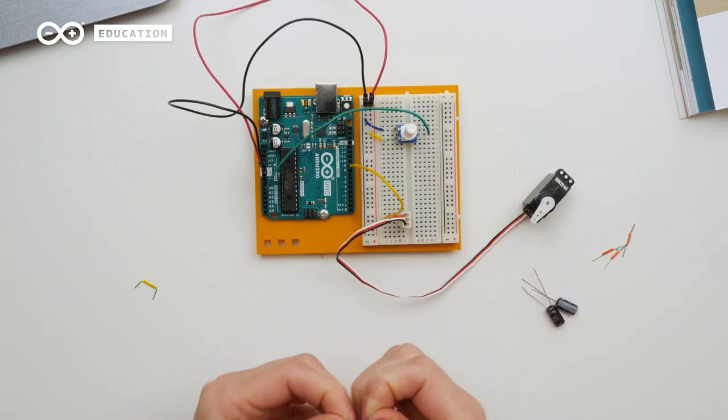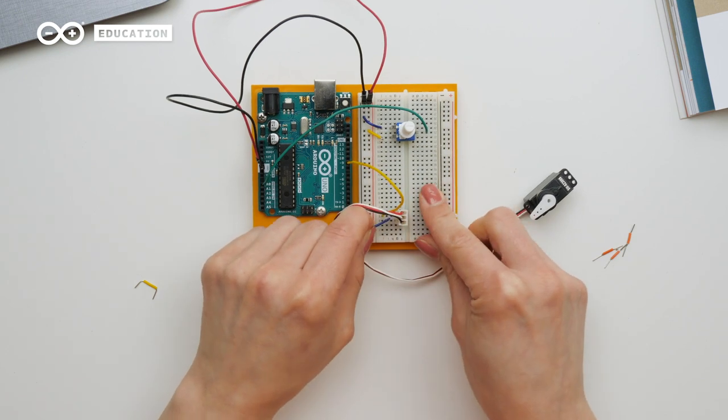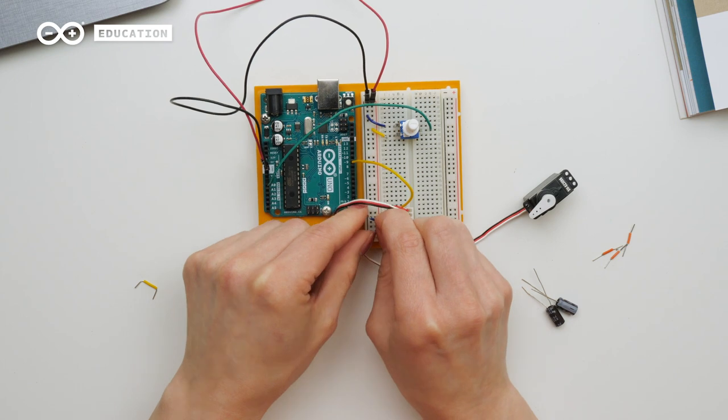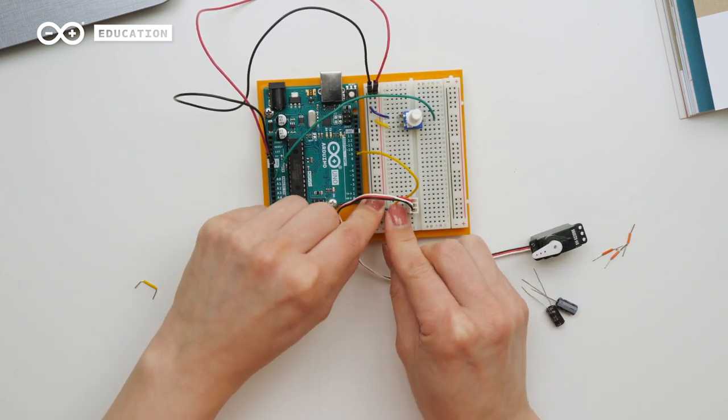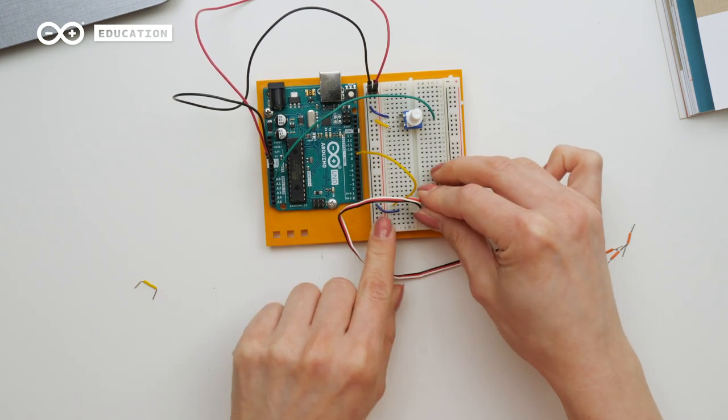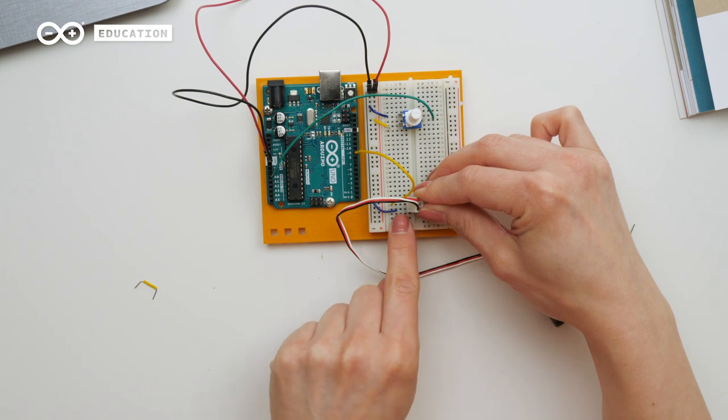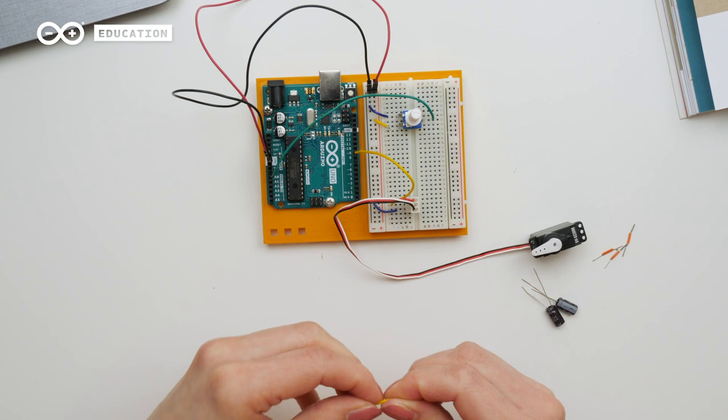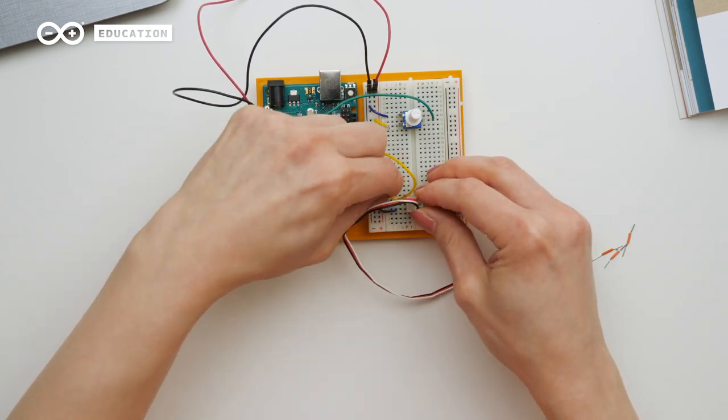Then I have ground here, so I will connect the row that has the ground. Same way as we have for the potentiometer, make sure that you have holes between the wire and between the servo so we can fit the capacitor here. And then the red one to power.